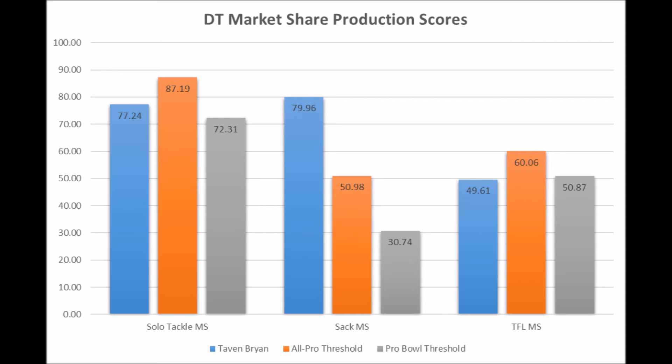He had a 49.61 instead of the bottom-end threshold of 50.87 out of 100, but it's pretty close — within the margin of error. He doesn't quite hit all the All-Pro thresholds for the position, and that takes his general projection down a notch when you look at the overall production data. The data basically takes him out of future Hall of Famer status to a guy that could be really, really good, but just not amazing.